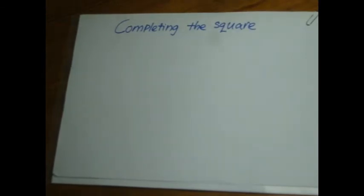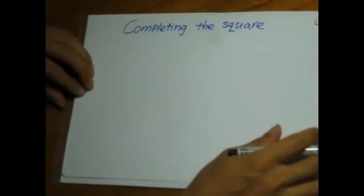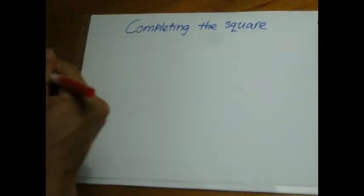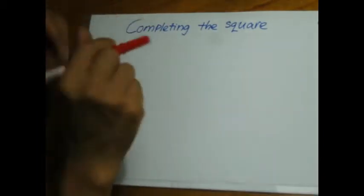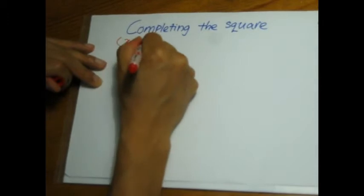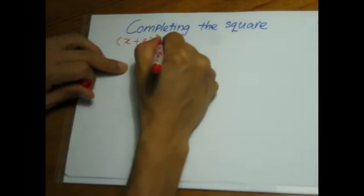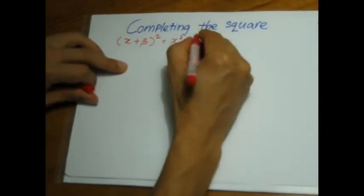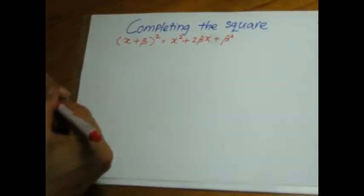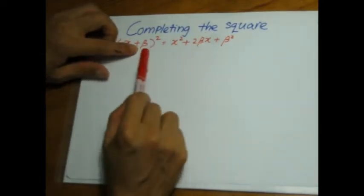Welcome to the Classroom of Ming. Today I will talk about completing the square and the rationale for the formula. First of all, let us start by looking at this particular expansion: x plus beta, everything squared, which you are very familiar with. And if you expand this, you will get x squared plus 2 beta x plus beta squared. This particular alphabet is called beta. It's a Greek alphabet for B.